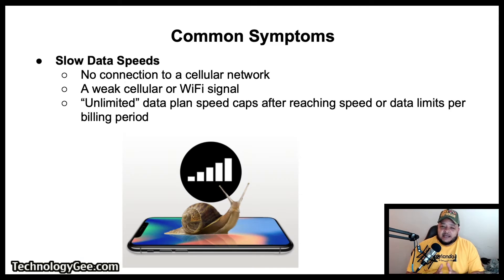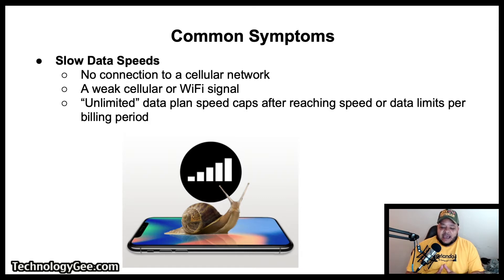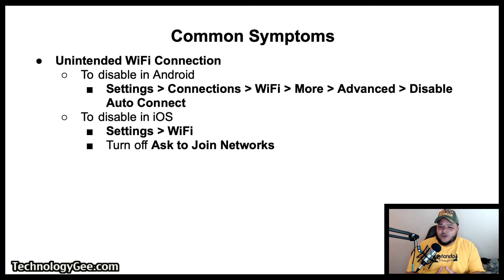For slow data speeds, some factors include no connection to a cellular network — check the device's network indicator to determine its connection type — and weak cellular or Wi-Fi signals, so switch to a stronger SSID signal if possible. You may also encounter data plan speed caps after reaching data limits per billing period; check data usage and set up warnings at a certain threshold, or switch to a plan that offers more data.